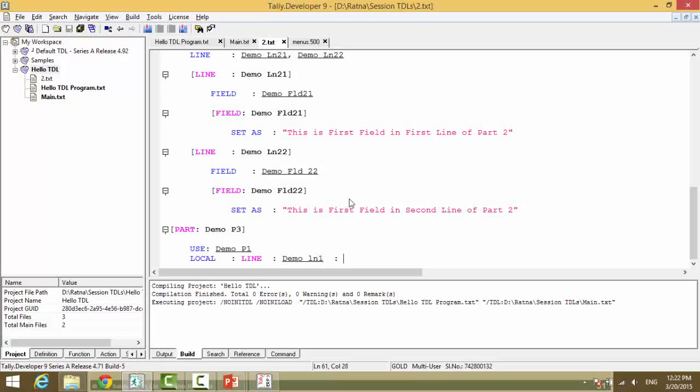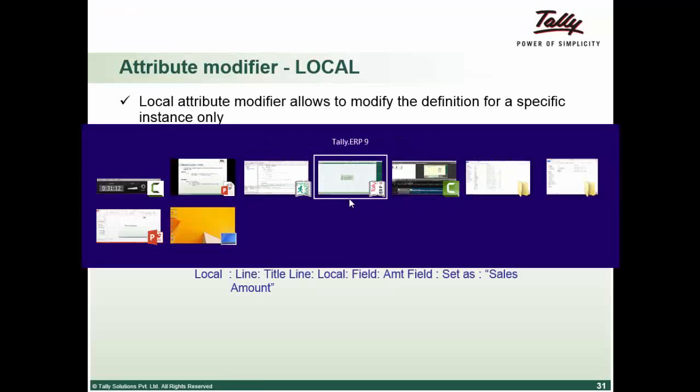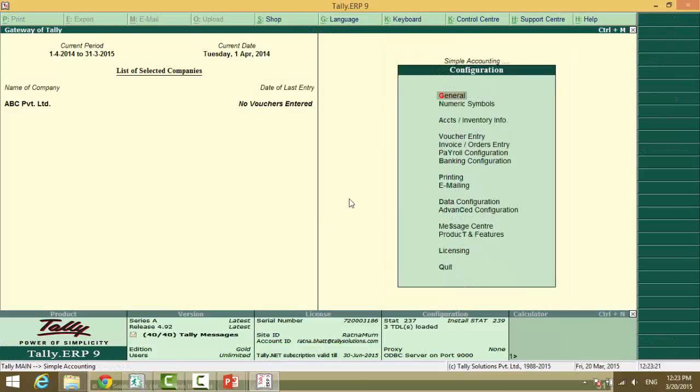In this what do you want? In this we have a field. So localize field demo fld one. Change the set as to this is part three. Now let us refresh our TTL and check. F12 TTL F4.